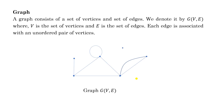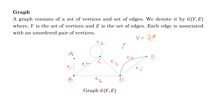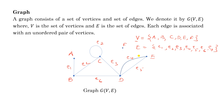Now let us start with the basic definitions of graph. A graph consists of a set of vertices and a set of edges; we denote it by G(V, E), where V is the set of vertices and E is the set of edges. For example, look at this graph G(V, E) — we can assign names to the points: A, B, C, D, E, and F. For edges: E1, E2, E3, E4, E5, E6, and E7. So V = {A, B, C, D, E, F} and E = {E1, E2, E3, E4, E5, E6, E7}.